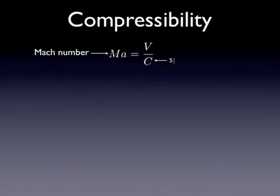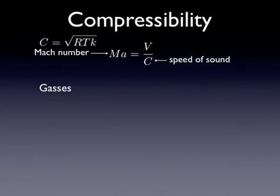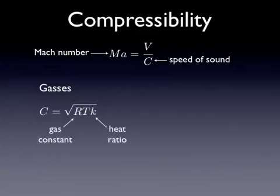So the Mach number is the ratio of the velocity over the speed of sound. You can calculate the speed of sound in gases using this equation, and it uses the gas constant and the heat ratio. The heat ratio we haven't used yet, but you can look that up on tables in your textbook. And temperature, when you use temperature in here, keep in mind it has to be in degrees Kelvin or degrees Rankine to be consistent with the gas constant.